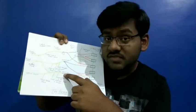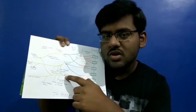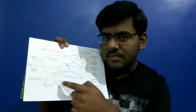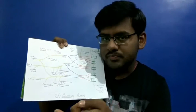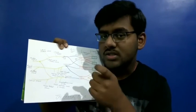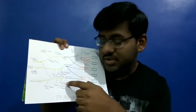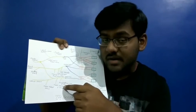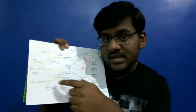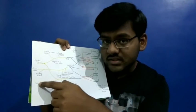For the medial cord, the mnemonic is M4U. First is the medial cutaneous nerve of arm, then medial cutaneous nerve of forearm, then medial pectoral nerve, and then the ulnar nerve.